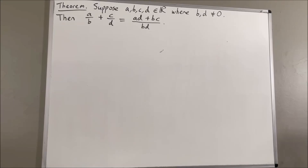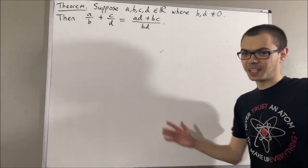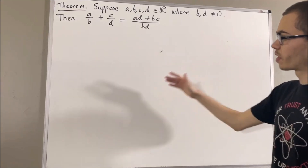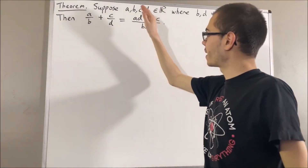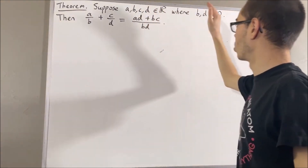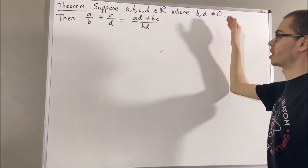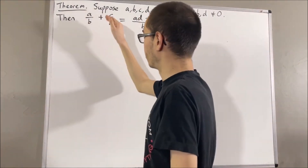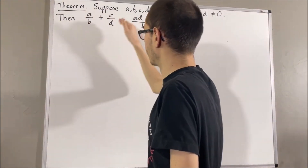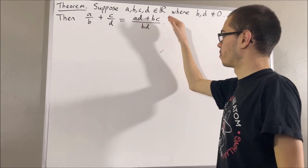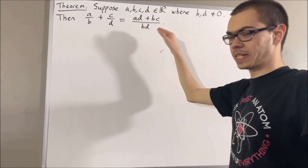Hello! In this video, we are going to prove the following theorem. Suppose A, B, C, and D are real numbers, where B and D are non-zero. Then, A over B plus C over D is equal to AD plus BC, all over BD.